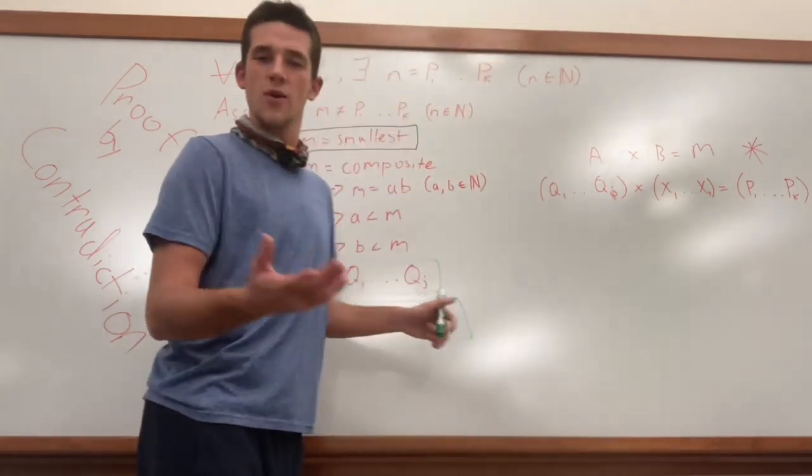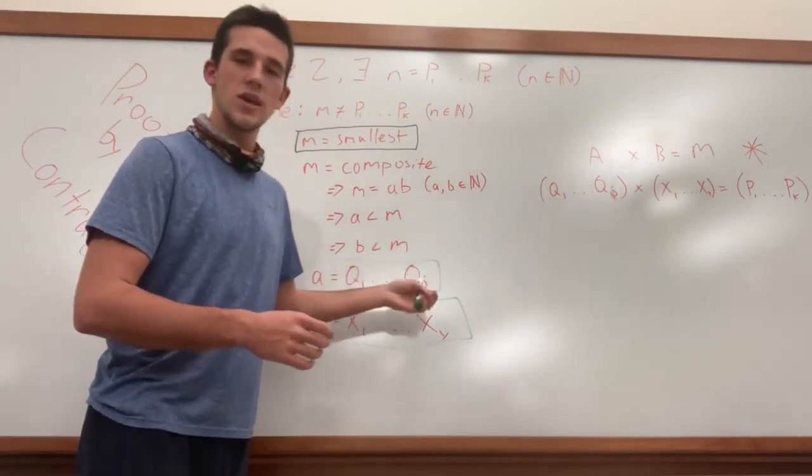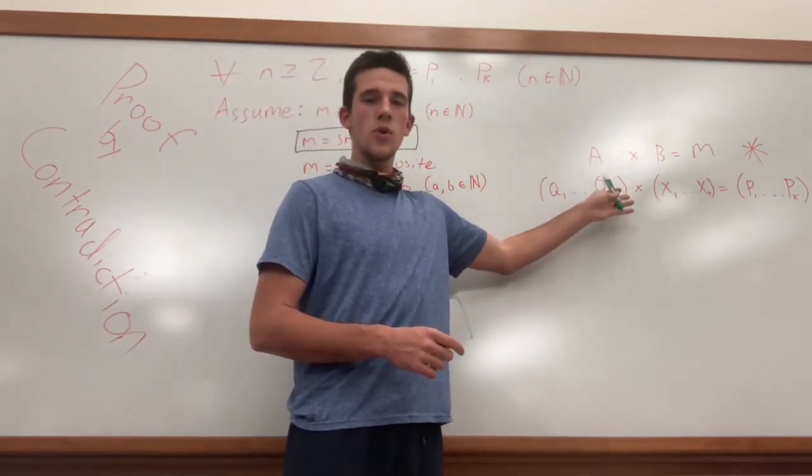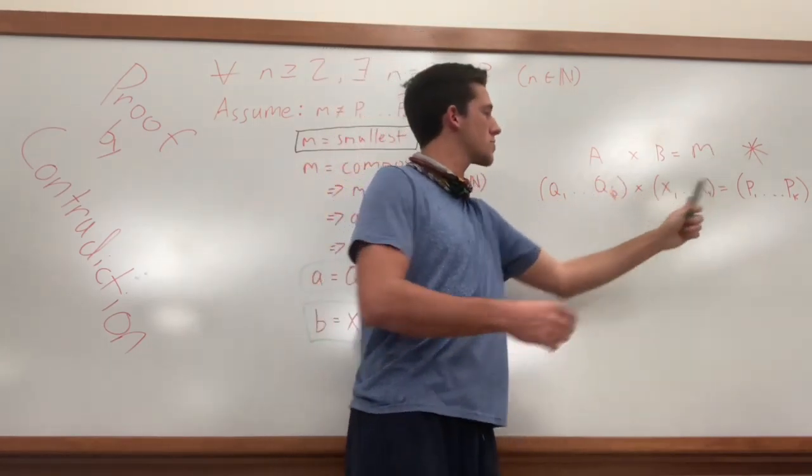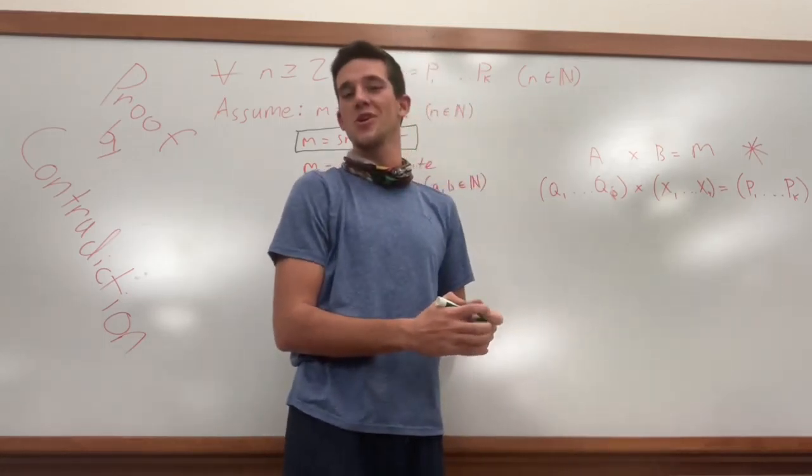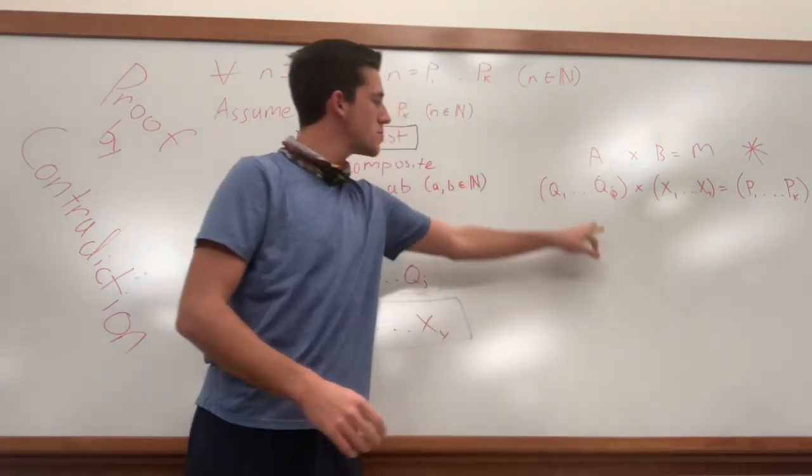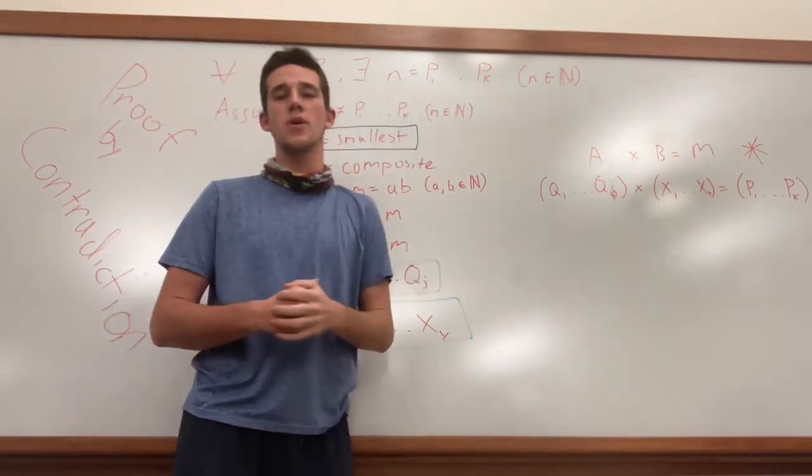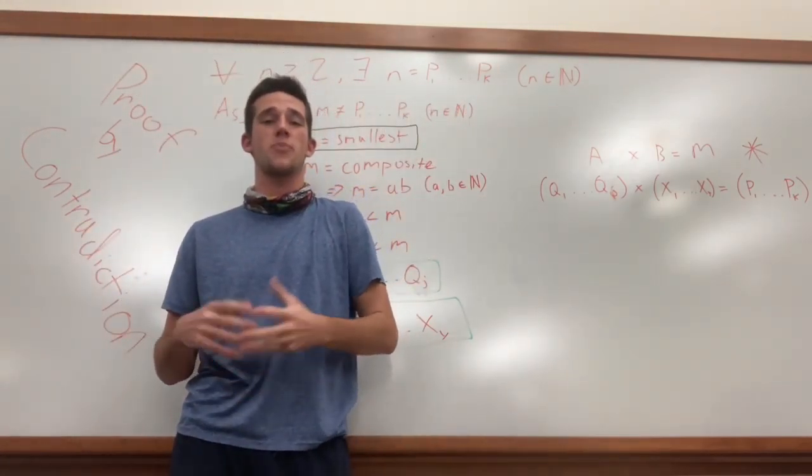Well, I thought that earlier in the proof, we said a times b equals m, and m does not equal product of prime numbers, but lo and behold, we can see that product of primes times product of primes equals product of primes, which clearly here is the contradiction we are looking for. So, from seeing this contradiction over here, we can prove that for every natural number out there, there is a representation of a product of primes.